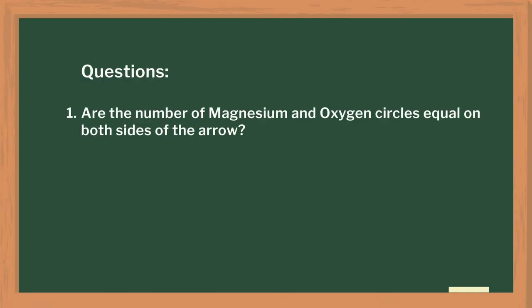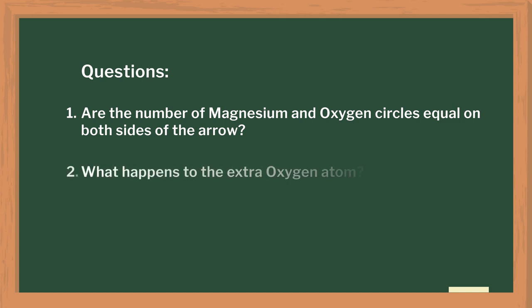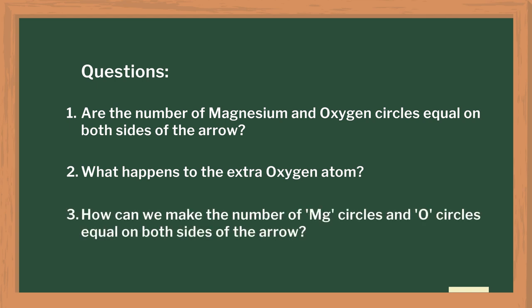For the second part, I distributed small cardboard circles with Mg and O written on them separately. I asked the students to rearrange them to complete the reaction. I initiated the discussion by asking: Are the number of magnesium and oxygen circles equal on both sides of the arrow? What happens to the extra oxygen atom? How can we make the number of magnesium circles and oxygen circles equal on both sides of the arrow?